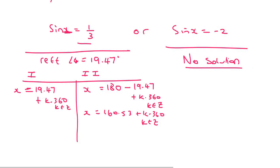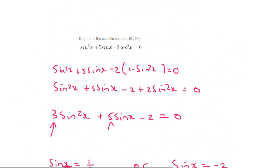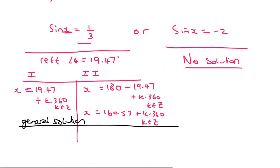Now, if we only stopped over here, this would be called the general solution. Now, you would do that if they don't give you an interval. But if you go up to the top here where the question started, they give us an interval. And they say find the specific solution.